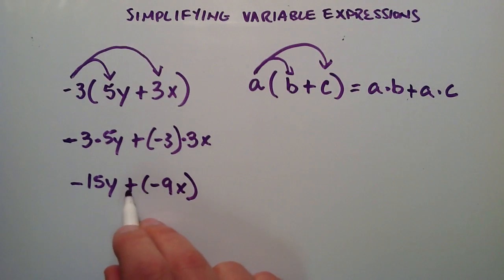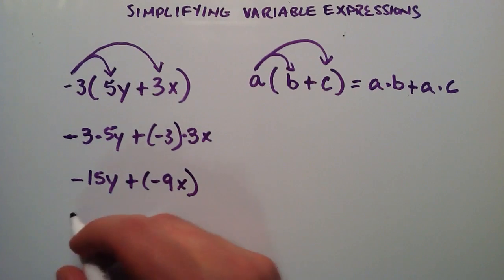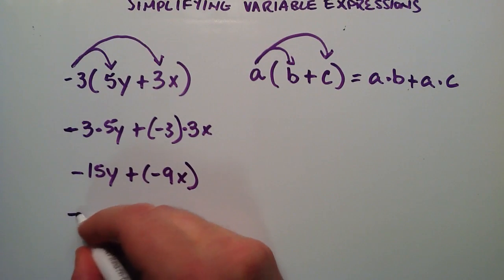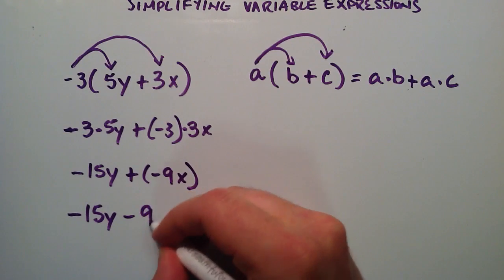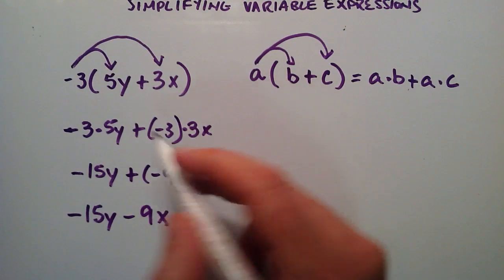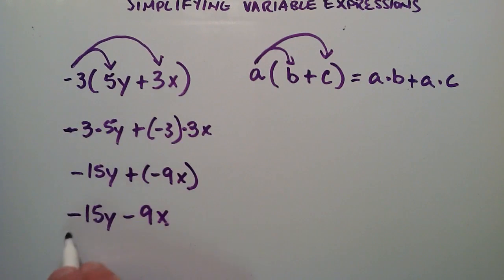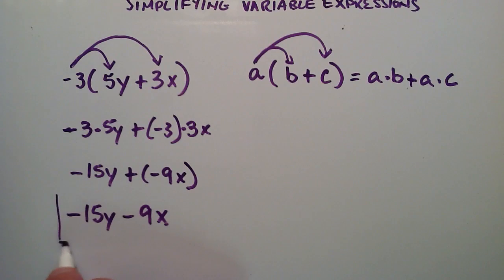So now, if you're adding a negative, it's really the same thing as subtracting a positive. So we can rewrite this bottom part as negative 15Y minus 9X. And so we've simplified this expression right here, and it looks like this. So this is basically our answer. This is our simplified expression.